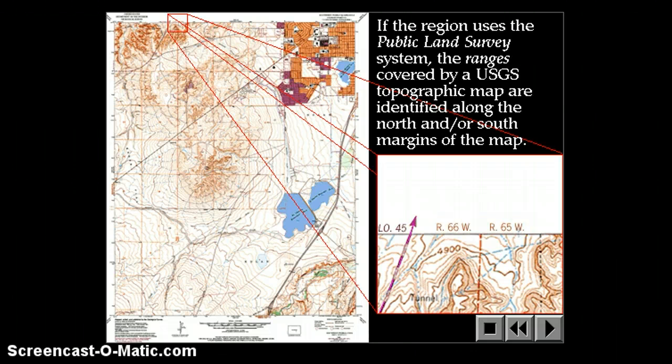The ranges will be across the top and the bottom of the map, and you'll see R for range, the number, and then either east or west, depending on if you're east or west of the meridian.